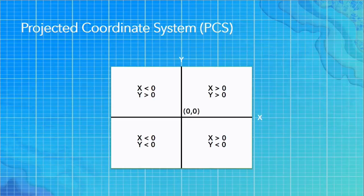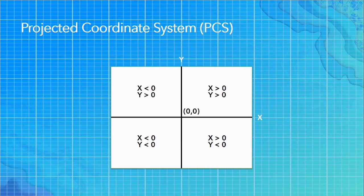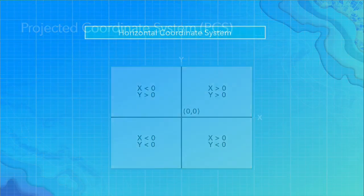In a projected coordinate system, we're dealing with a flat map. Measurements on this map are linear values — like meters, yards, or feet — measured from a particular origin. So we have the geographic, which is on the surface of a globe, versus projected, where we are converting the globe values to flat map values.